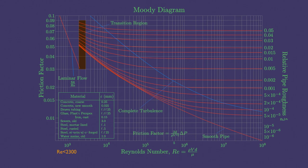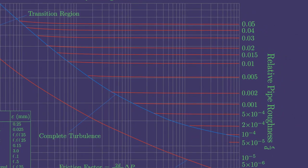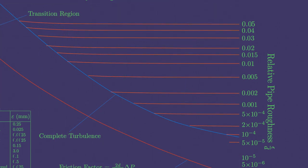At very large Reynolds numbers, that is to the right of the complete turbulence curve, the friction factor curves corresponding to specified relative roughness curves are nearly horizontal.